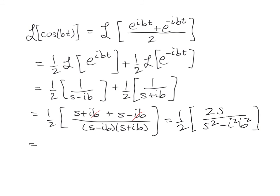And we all know from complex numbers that I squared is negative 1. So that becomes S squared plus B squared. And then we'll notice that the 2s cancel. So we end up with S over S squared plus B squared. And that right there is the Laplace transform of the cosine of BT.